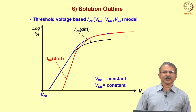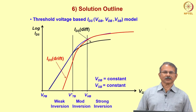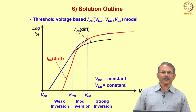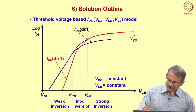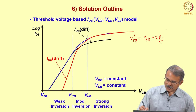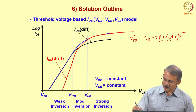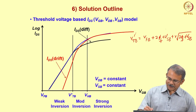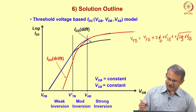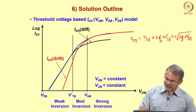In this context, the threshold-based model is obtained by partitioning the behavior into weak inversion, moderate inversion, and strong inversion, where the partitioning voltages are V'Tb and Vtb. V'Tb equals flat-band voltage plus 2φf plus Vsb plus γ√(2φf + Vsb), while Vtb uses 2φf + 6Vt in place of 2φf.